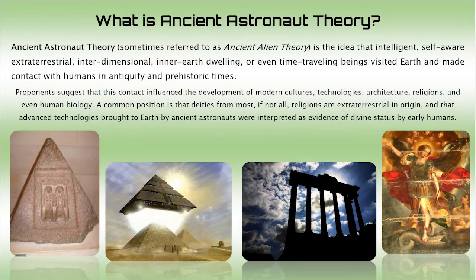They're aligned to the stars and also aligned to be timekeepers using the sun. We're also going to go over structures that are aligned to solstices and equinoxes. Before we start, I'm going to go over what ancient astronaut theory is, just to give us a refresher on what this theory is about.